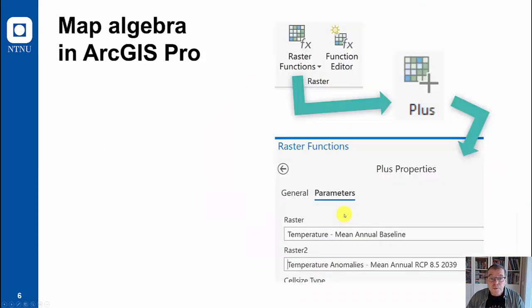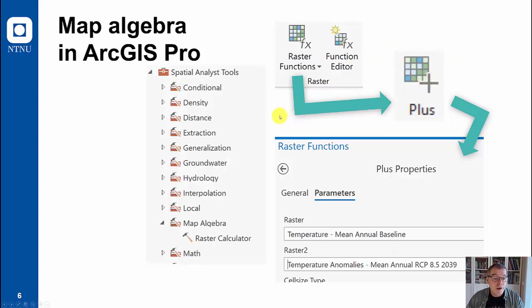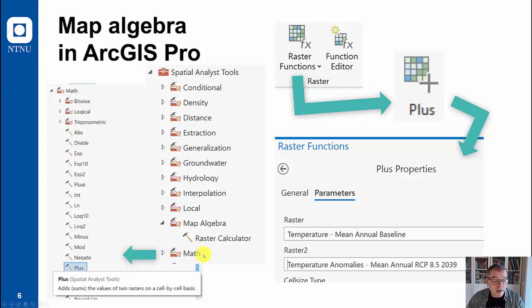You may find in other places in ArcGIS Pro there are raster functions where you can take out the plus function, which is also accessible through the toolbox from the math folder.